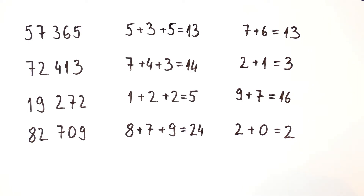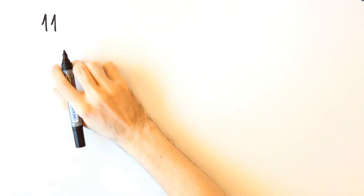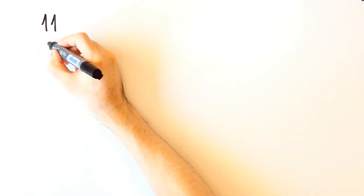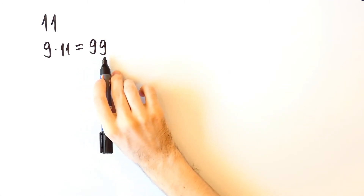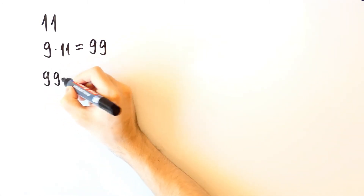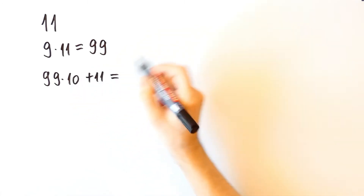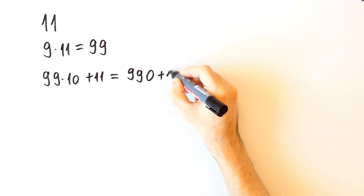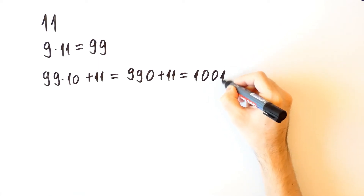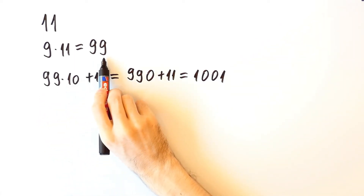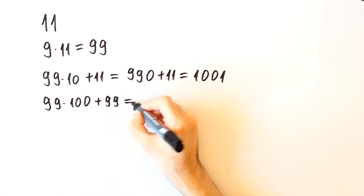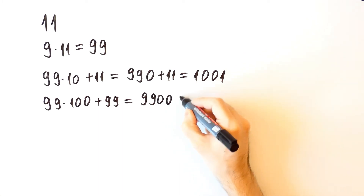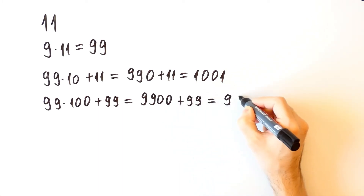We'll first show that some specific numbers are divisible by 11. 11 is divisible by 11. Next, 9 times 11 is also divisible by 11, so 99 is divisible by 11. The next number is 99 times 10 plus 11, which is equal to 990 plus 11, and that equals 9999, which is also divisible by 11.